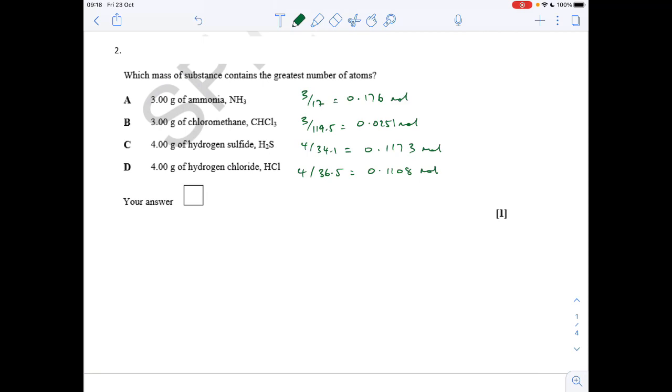So you can see there's the moles of each chemical. Now what we need to do to work out the number of moles of atoms is multiply by the number of atoms in each molecule. To calculate the number of atoms, you multiply those numbers by Avogadro's number. You can see that the moles of atoms - the highest moles of atoms - and therefore the highest number of atoms is option A.